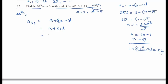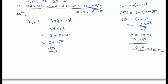a_32 equals a plus 31d equals 3 plus 31 times 5 equals 3 plus 155 equals 158. So 158 is the 20th term from the end.